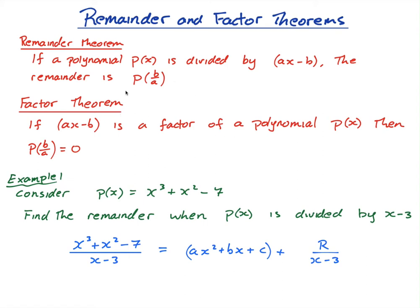And then the factor theorem is basically just a version of the remainder theorem where the remainder is zero. So if ax minus b is a factor of a polynomial p(x), then p(b/a) equals zero. Now that probably doesn't make a whole lot of sense yet, but once I explain this hopefully it will. So first example, I'm going to do a remainder theorem example where I explain the theory behind it. I'll do a factor theorem example and then I'm going to do a past paper example.